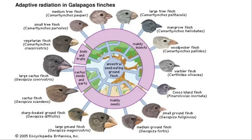That naturally led to different beak sizes and shapes being more or less favorable in certain situations, and over time the population naturally selected for whatever the advantageous beak was. On the left, the large cactus finch had a fairly large, long beak. The small ground finch, living in a different environment, had a smaller beak. Because these finches lived in different locations with different environments, they adapted to those specific environments — resulting in different beak shapes.